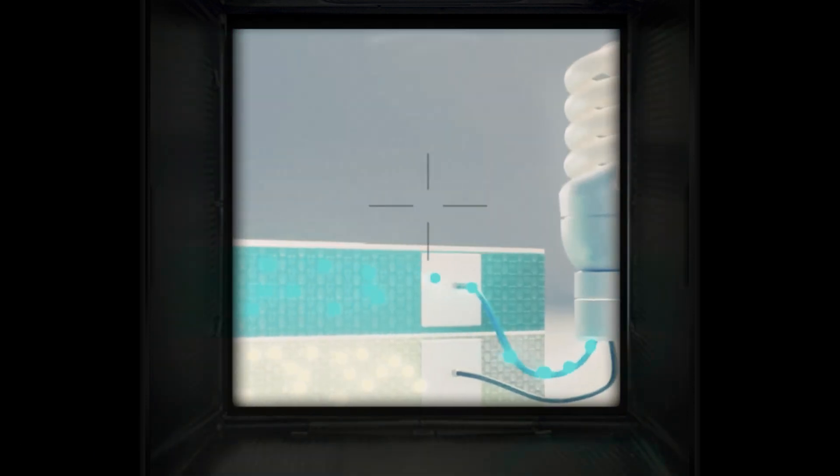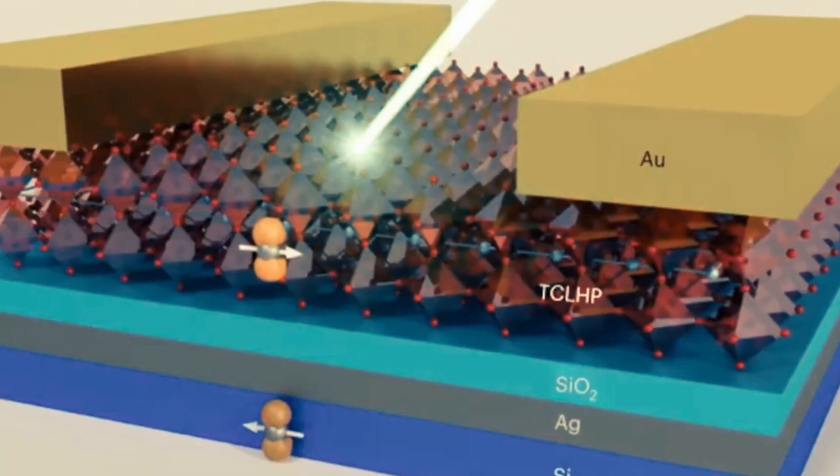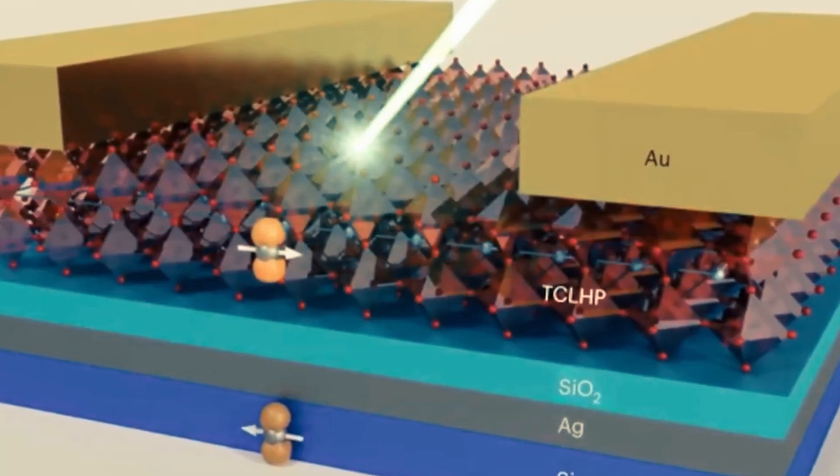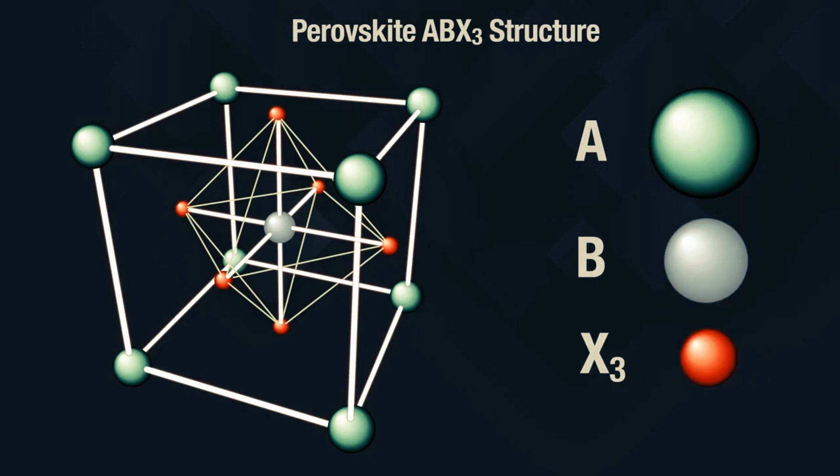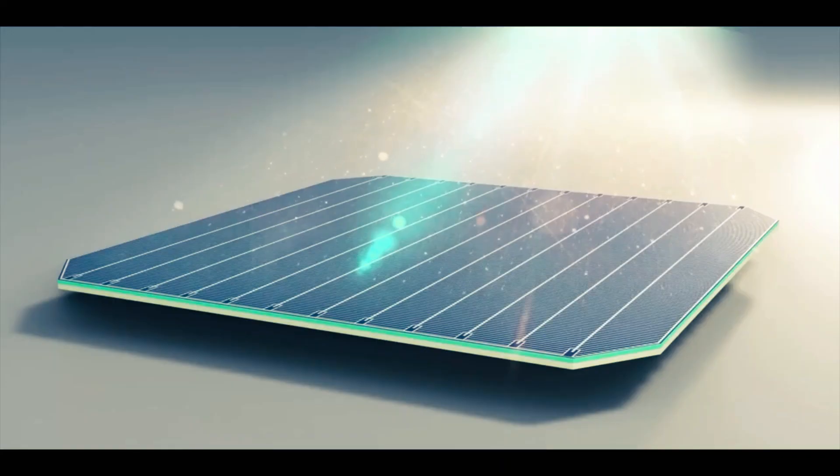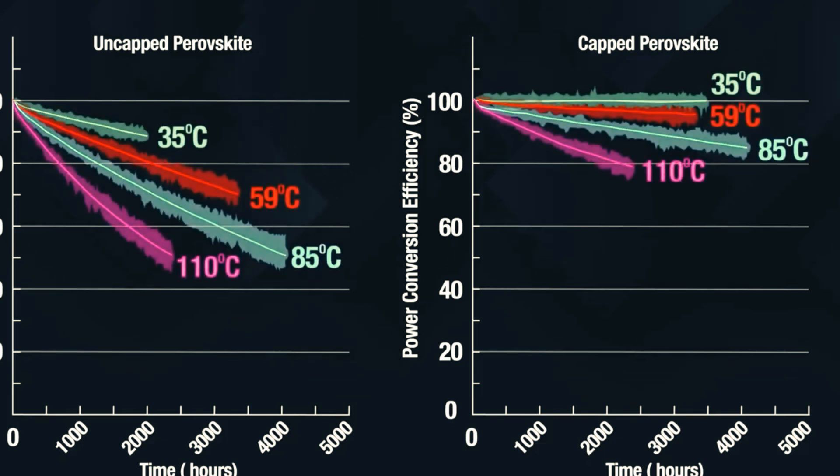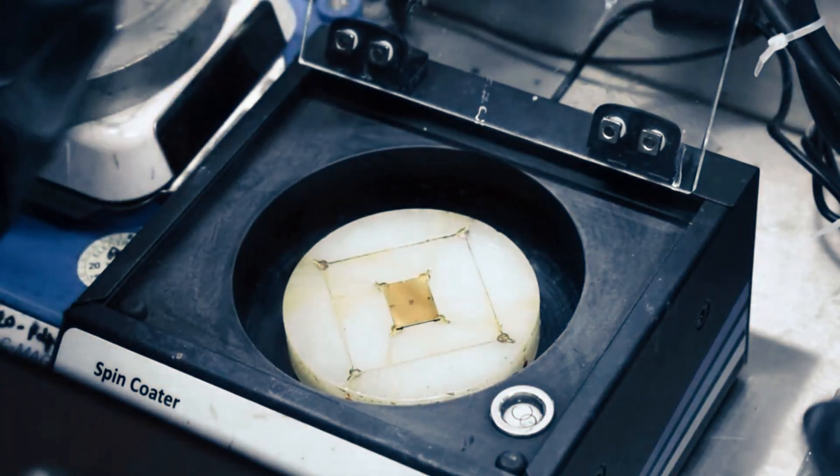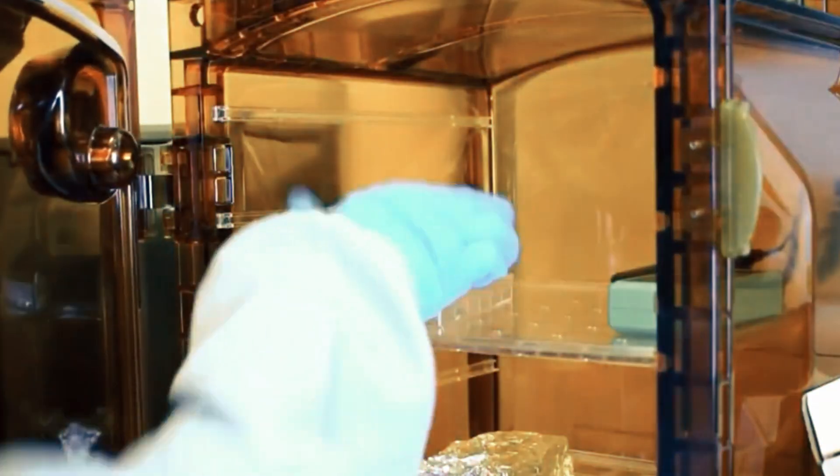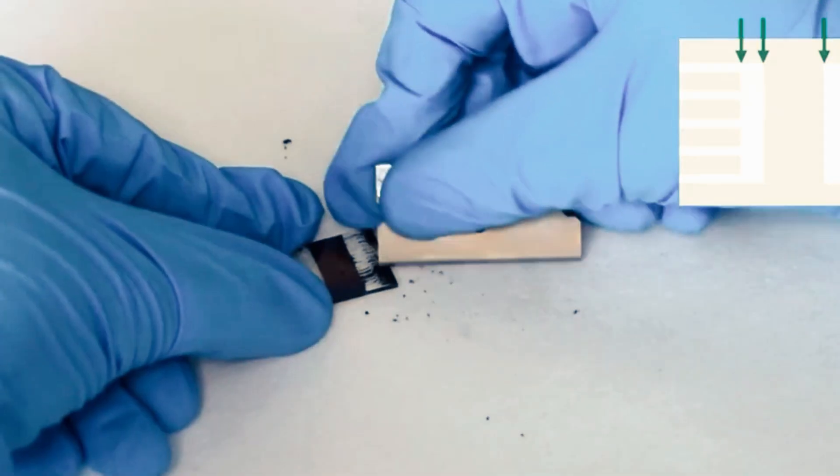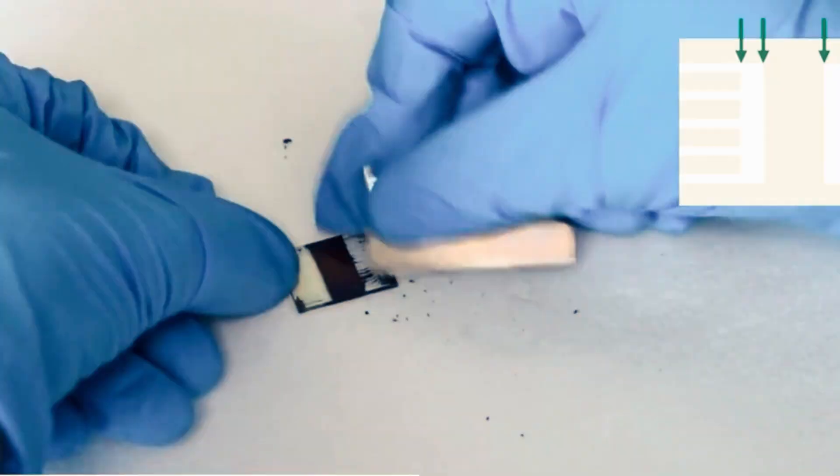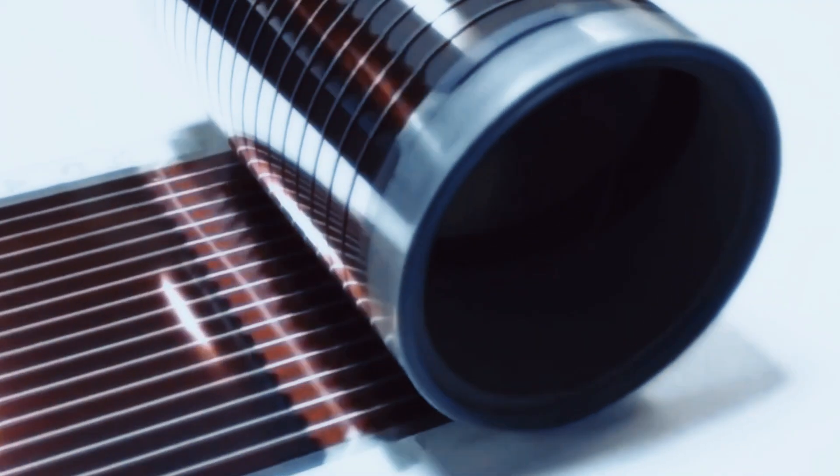Perovskite solar cells have the potential to achieve remarkable efficiency in converting sunlight into electricity. Perovskite materials have a special crystal structure that enables them to absorb a wide range of sunlight, from visible to infrared wavelengths, better than conventional silicon-based solar cells. There are laboratory-scale perovskite solar cells that have already exceeded 25% efficiency, putting them on par with commercial silicon solar cells.